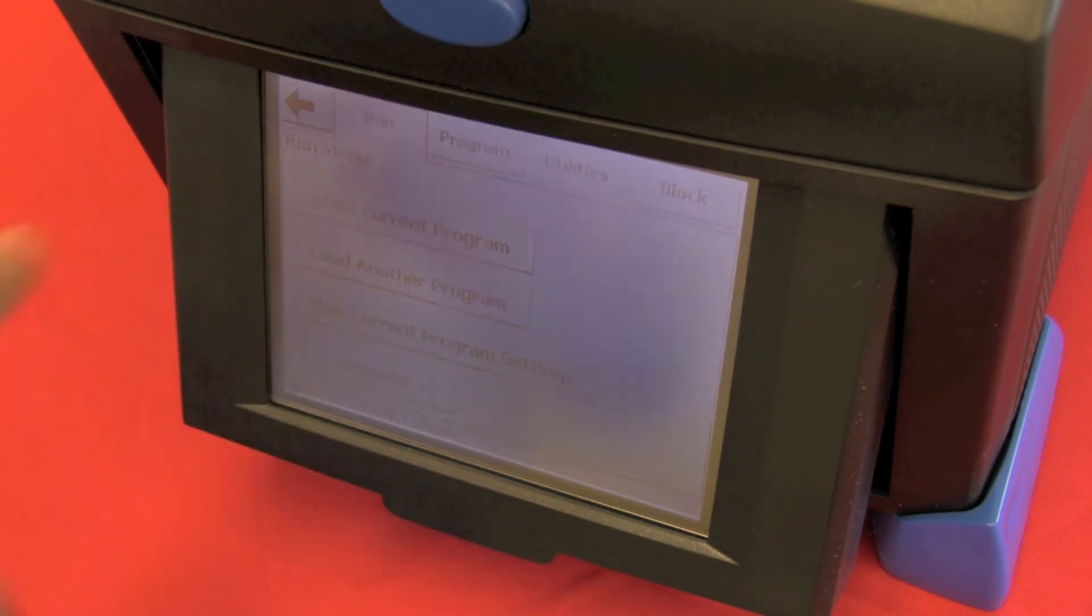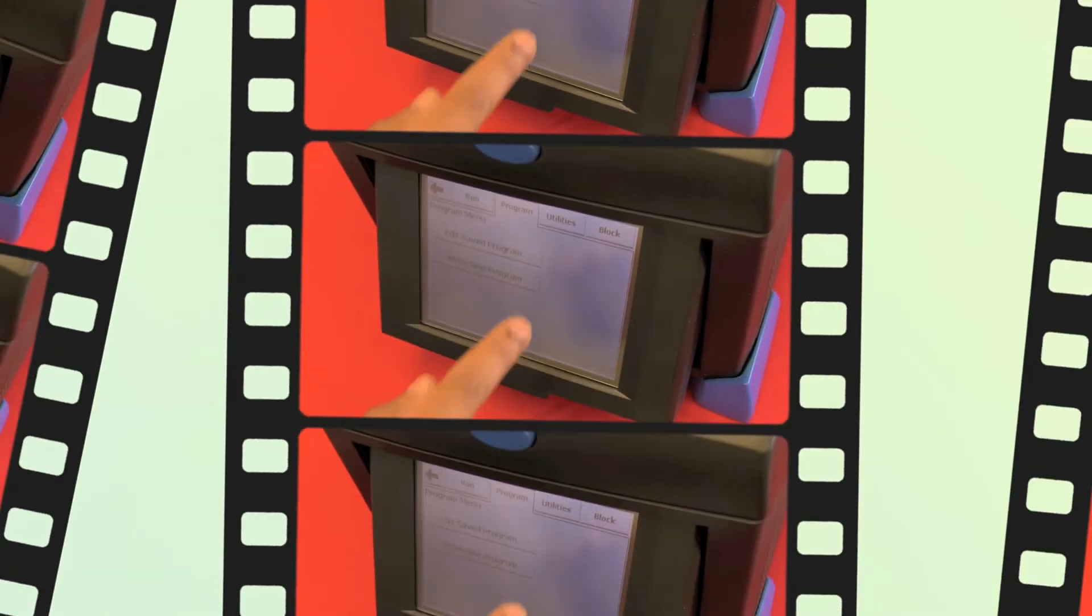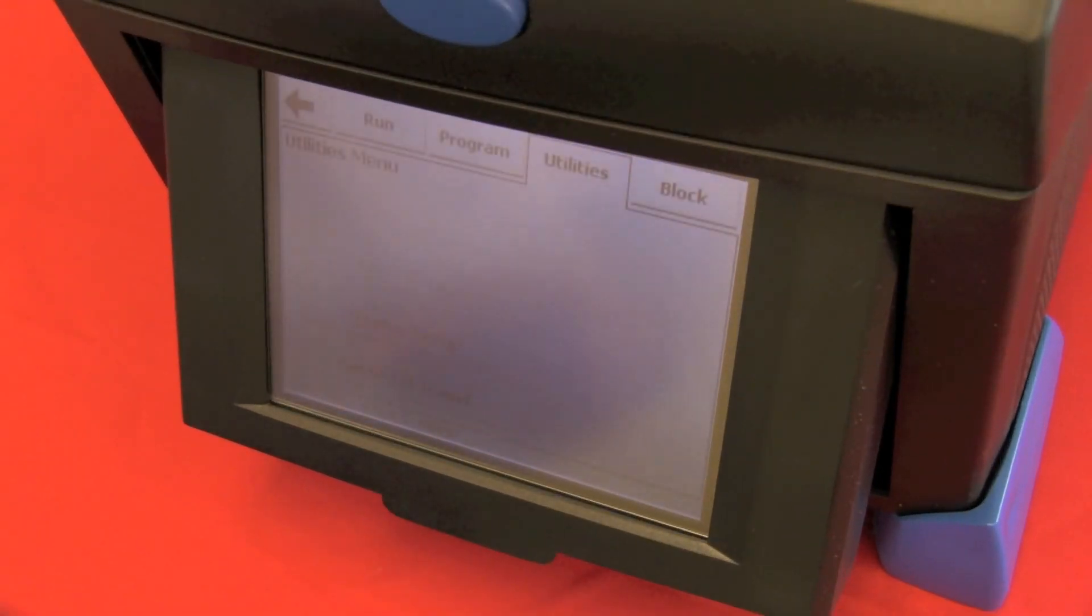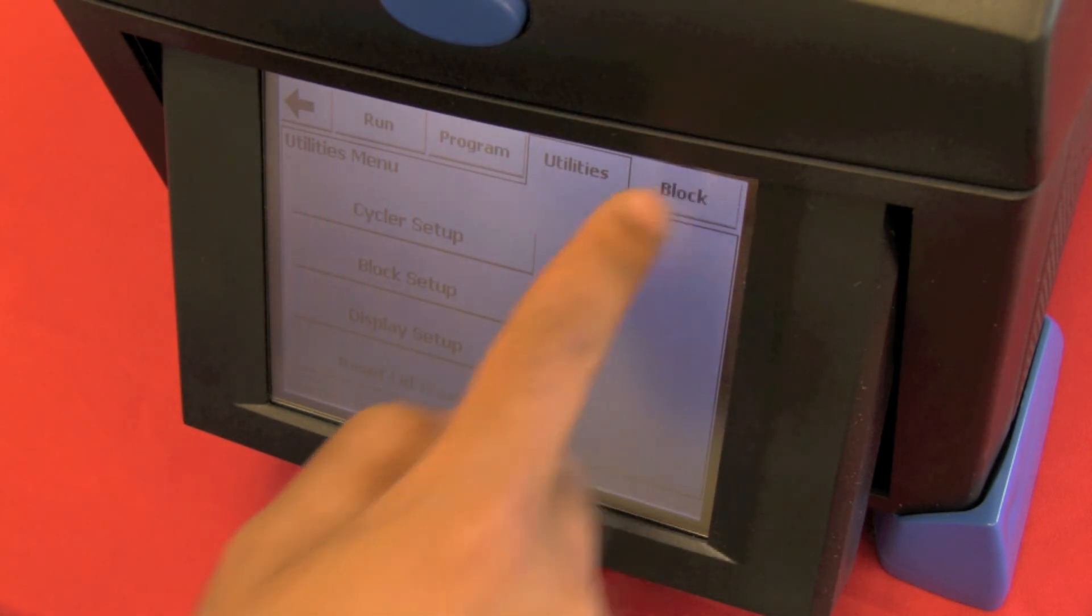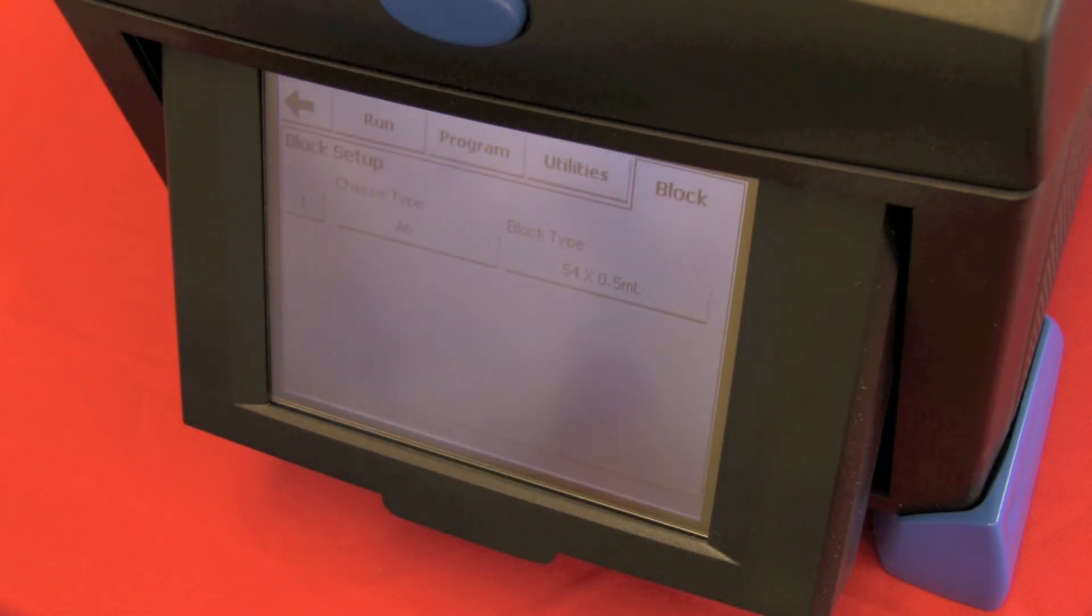If we go into the program menu, we can edit our saved programs, write a new program. If we go into those, we'll obviously have the ability to change parameters as required. If we go into utilities, we see other options like your cycler setup, your block setup, your display setup, and reset lid travel. And if we look at the final option of block, we can see which block is actually in there at any given time.